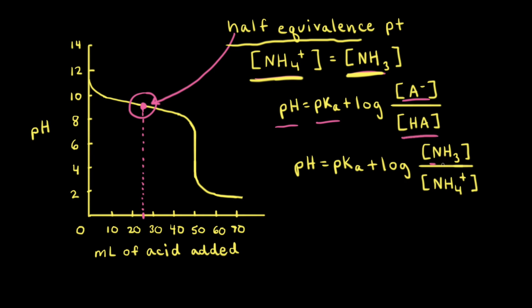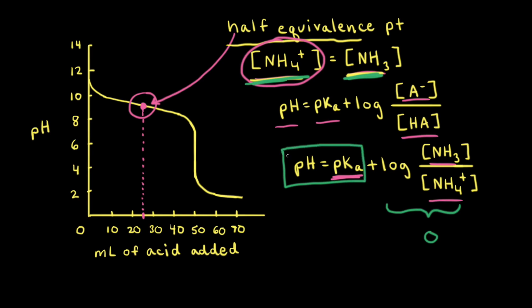In this example, the base is ammonia NH3 and the conjugate acid is the ammonium cation NH4+, so the pKa in the Henderson-Hasselbalch equation refers to the pKa of ammonium. Because the concentrations of ammonium and ammonia are equal at the half equivalence point, their ratio is 1 and log(1) = 0. Therefore, pH = pKa at the half equivalence point. Drawing a dotted line from the half equivalence point to the y-axis gives the pKa of ammonium — in this case a little over 9.